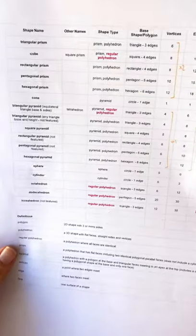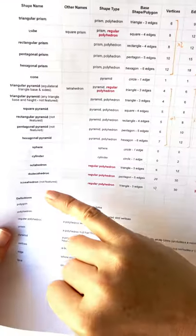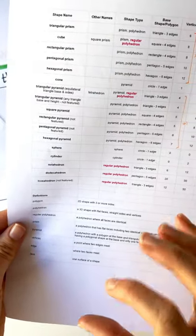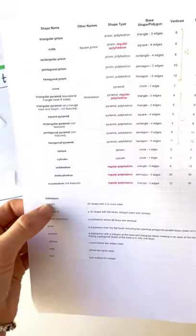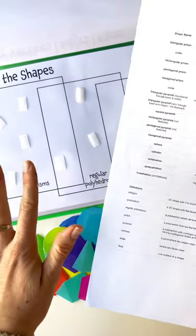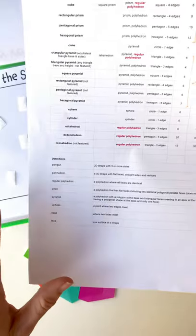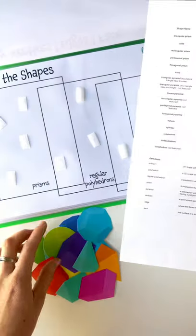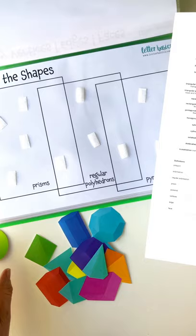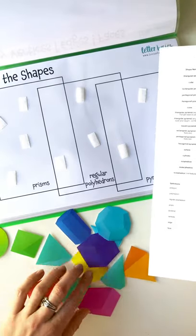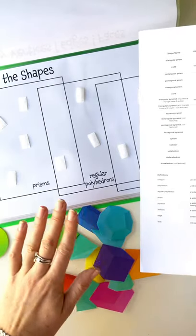You also have a cheat sheet or reference sheet as far as the names of the different shapes and the definitions. A polygon is a 2D shape, so we're not dealing with them here. We're dealing with polyhedrons, which are a 3D shape with flat faces, straight sides, and vertices, which will not include our sphere.